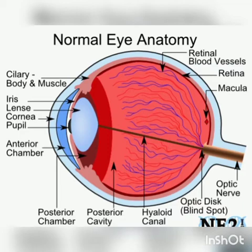As seen in the picture, the posterior chamber is below and the anterior chamber is above it. The anterior chamber contains a clear watery fluid called aqueous humor. The posterior chamber contains a jelly-like substance called vitreous humor. These two chambers — posterior chamber and anterior chamber — are present inside the eye.